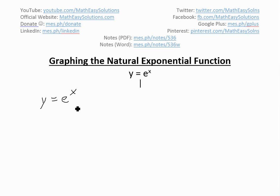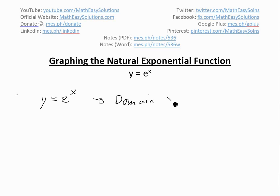First thing you should do is look at — this is an exponential function, e to the power of x. x could be anything, it could be negative, it could be zero and this function is still defined. So the domain is going to be x is all real numbers, written as x element of all real numbers, meaning x goes from negative infinity to infinity.